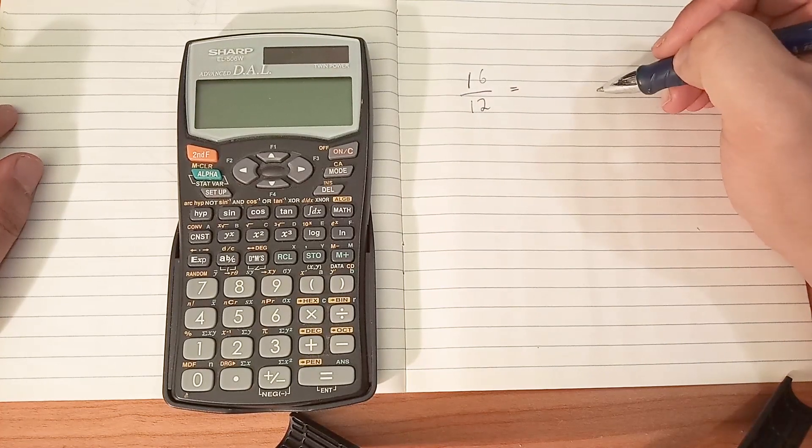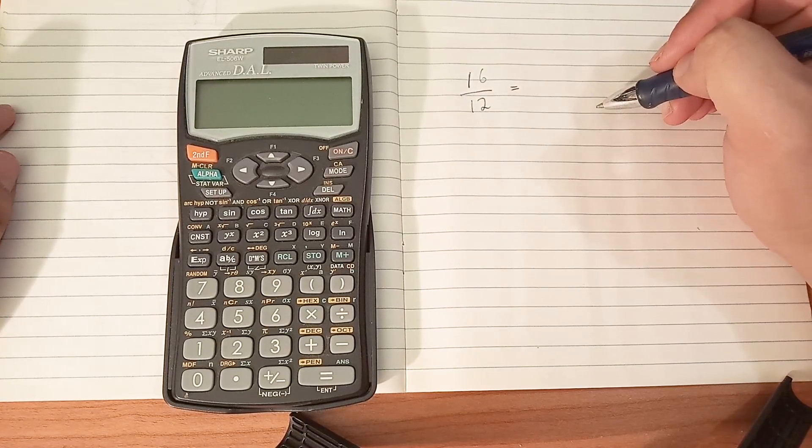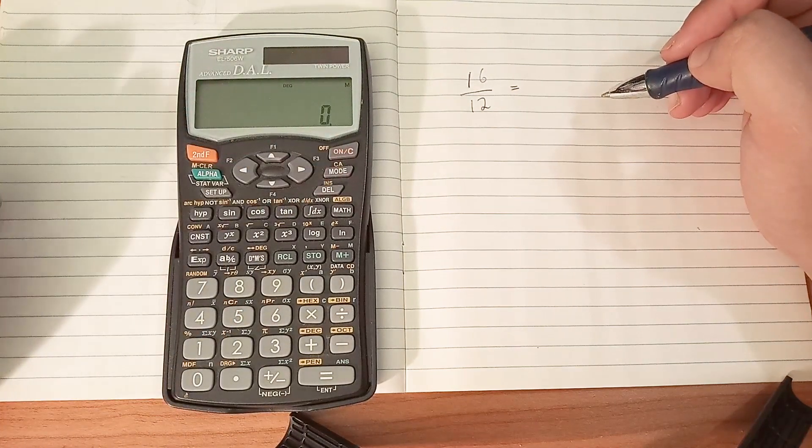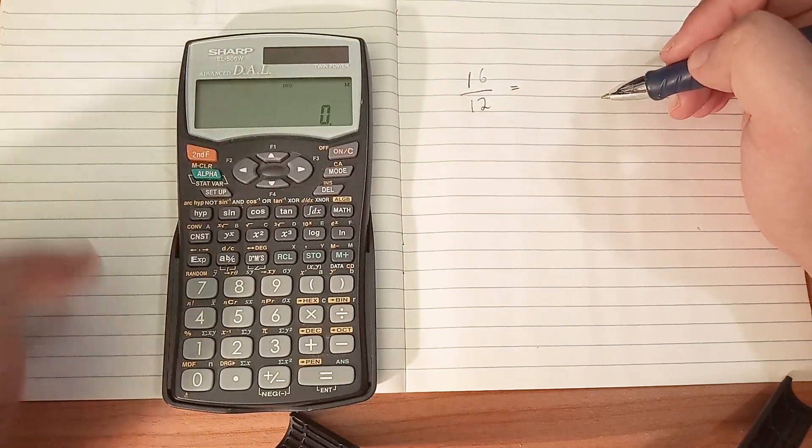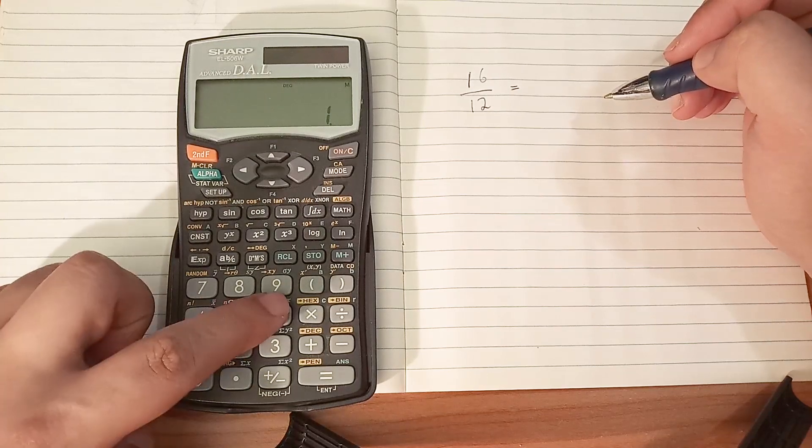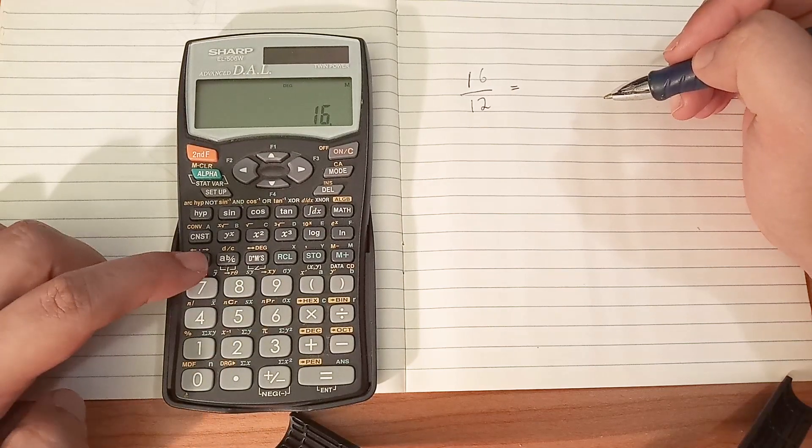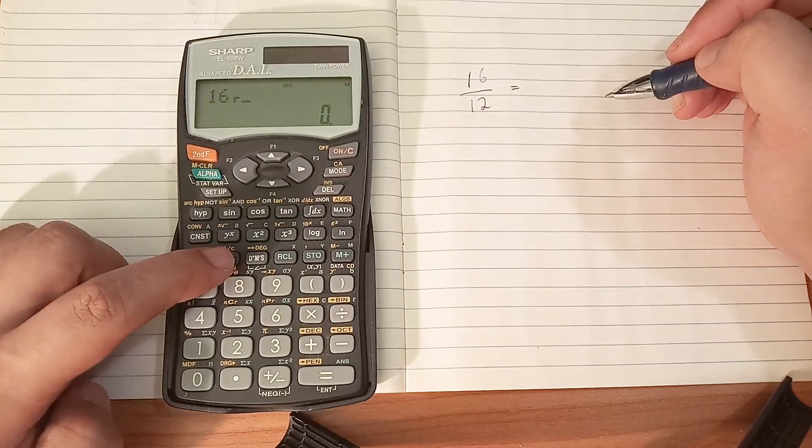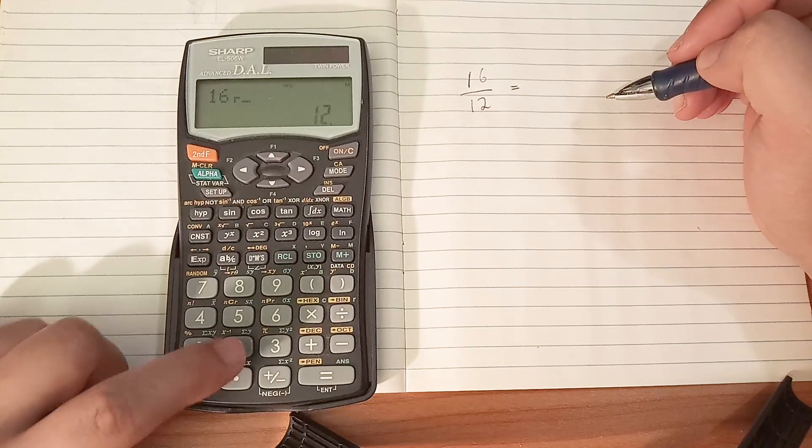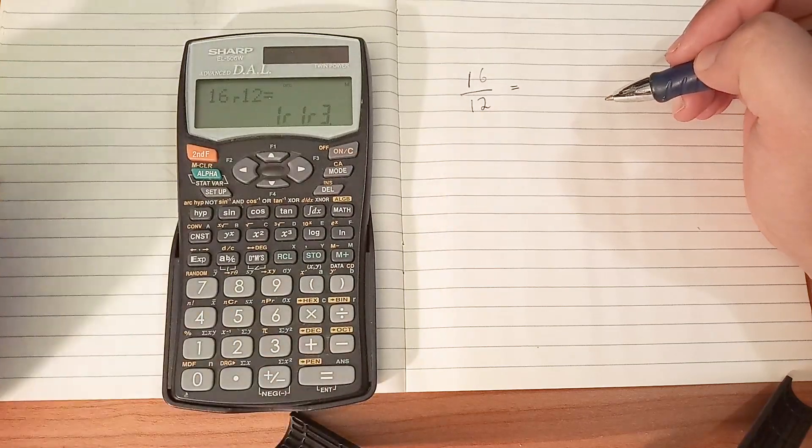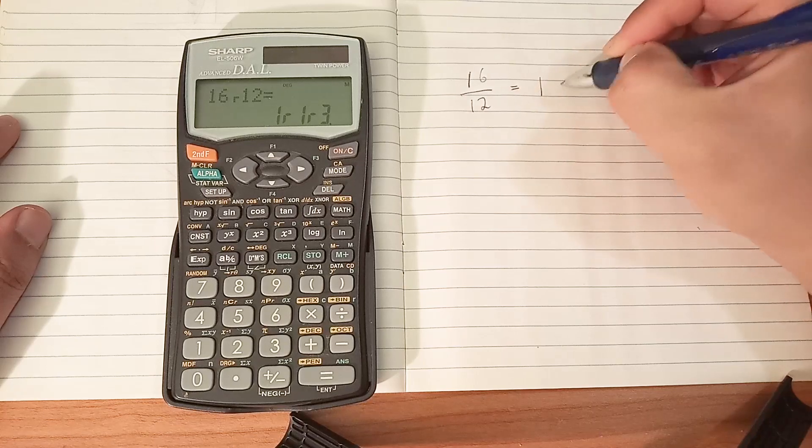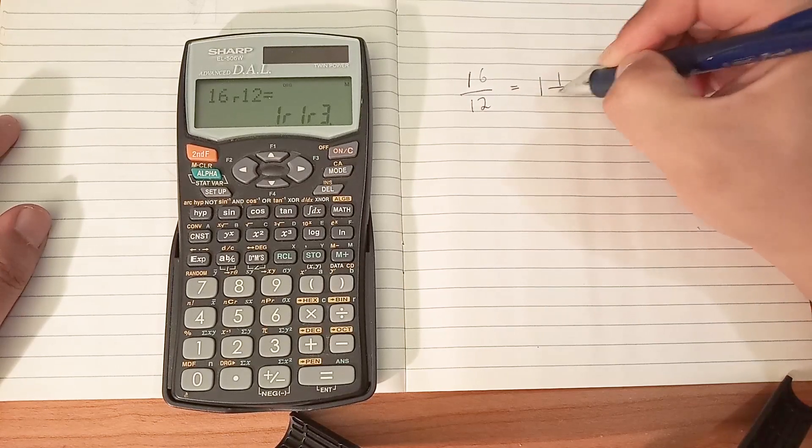I want to simplify that fraction and find out what's the simplest form. So let's turn on the calculator and type in 16. Now the fraction key looks like this: a b/c—this is the fraction key. Then 12, press equals, and now you have 1 and 1 over 3.